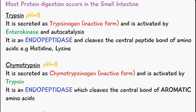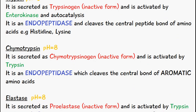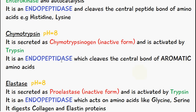We also have chymotrypsin, which has an optimum pH of 8. It is secreted as chymotrypsinogen and it's activated by trypsin. Chymotrypsin is an endopeptidase and it cleaves the central bond of aromatic amino acids.